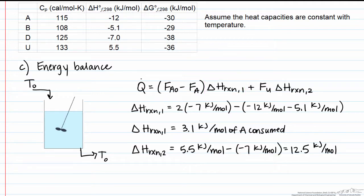Similarly, the heat of reaction 2 is products minus reactants, our only product is U for the heat of formation of 5.5 kilojoules per mole. We subtract off the heat of formation of the reactant D, which is negative 7 kilojoules per mole, to get an overall heat of reaction of positive 12.5 kilojoules per mole for this endothermic reaction.